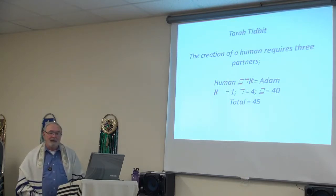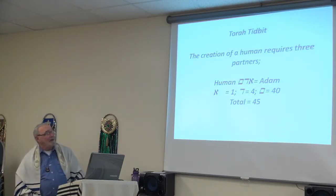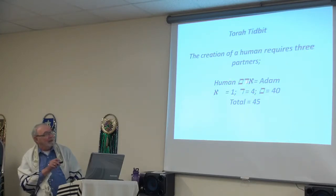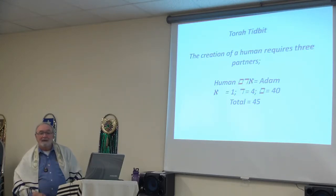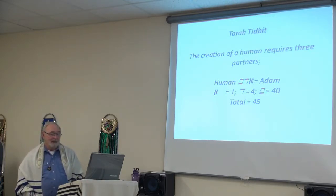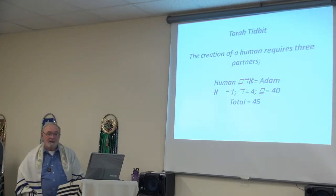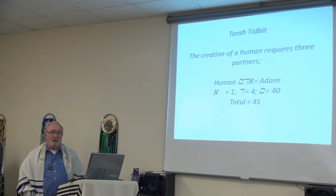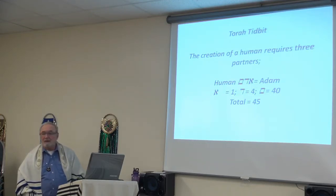A human is Adam. Adam is made up of three letters — an aleph, dalet, and a mem sofit. In gematria, the aleph equals one, the dalet equals four, and the mem is 40. When we add that up, it is 45. So in the word adam, which represents humans, the gematria is 45.